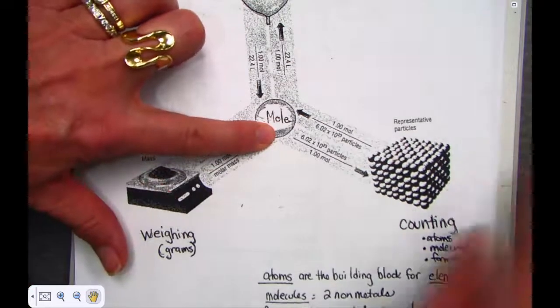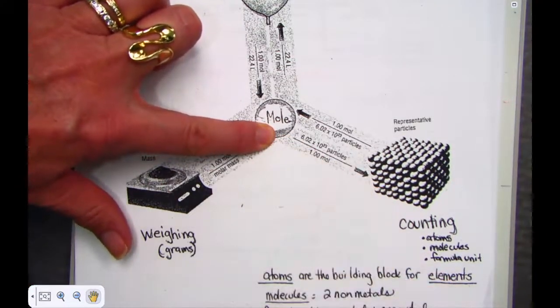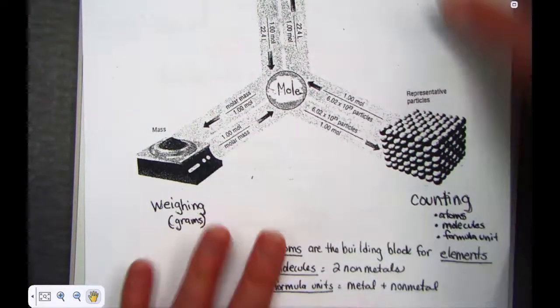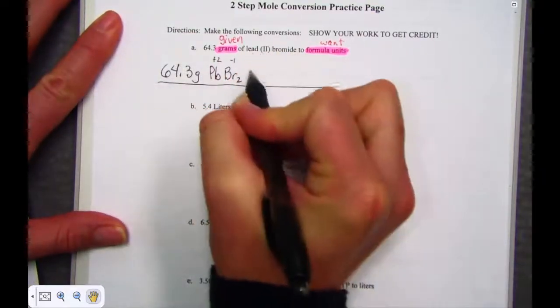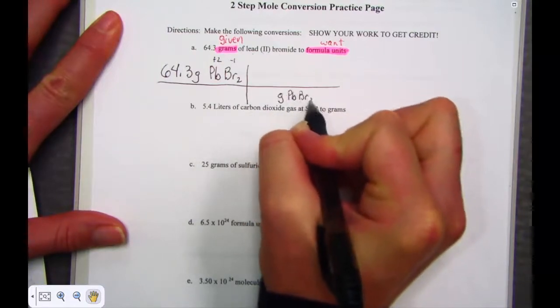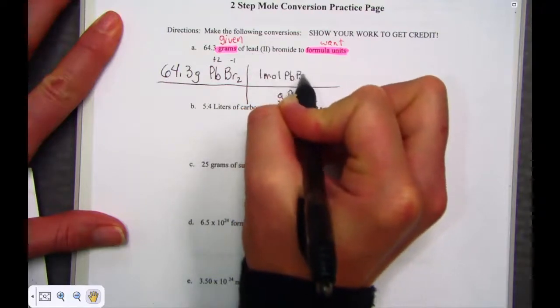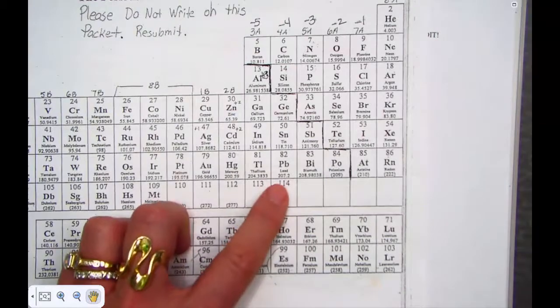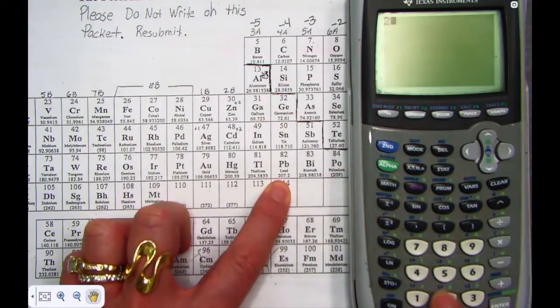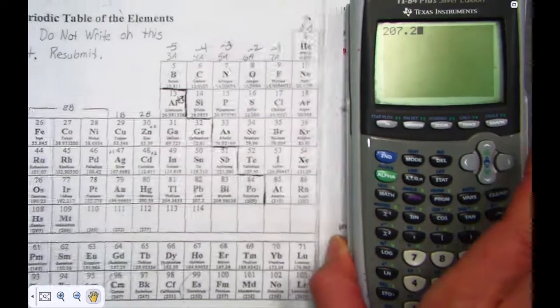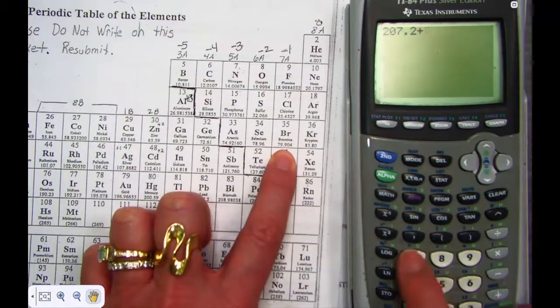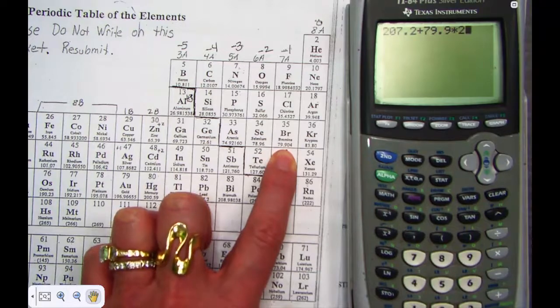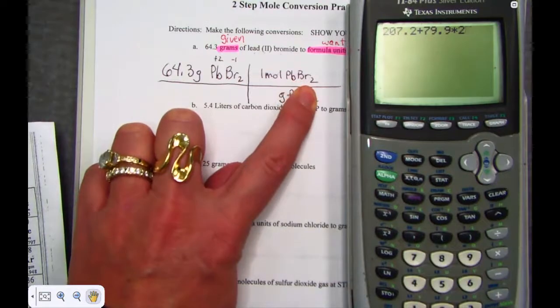We will need to go into the mole using molar mass and then back out to the world of particles — those particles are formula units. On our calculator we need to find the molar mass. In our first conversion step, I want to cancel grams of lead bromide and go into the mole. That conversion is molar mass, found using the periodic table. Lead has a gram atomic mass of 207.2. Bromine has an atomic mass of 79.9 times 2, because there are 2 of them in PbBr₂. The molar mass is 367 grams per mole.